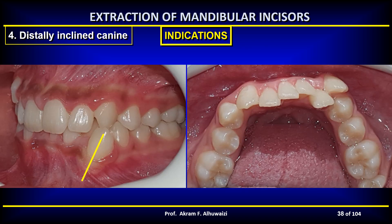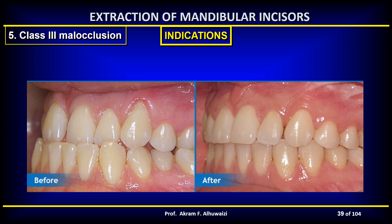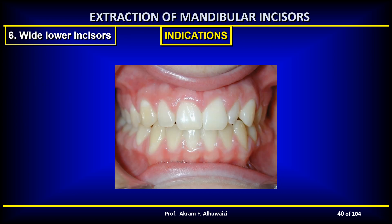When lower canines are severely inclined distally with crowded lower incisors, it is difficult to correct this condition by extraction further back in the arch as it is difficult to upright the canine root and distally move it back. An incisor is extracted so that the other incisors can be tipped into correct position. In mild class 3 malocclusion with an acceptable upper arch and lower incisor crowding, a lower incisor may be extracted to achieve normal overjet, overbite, and relieve crowding.